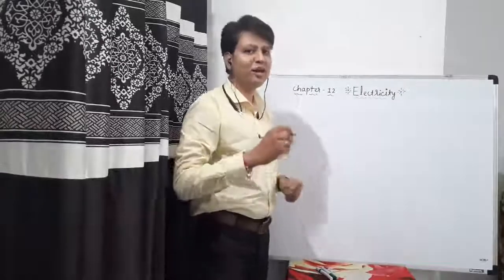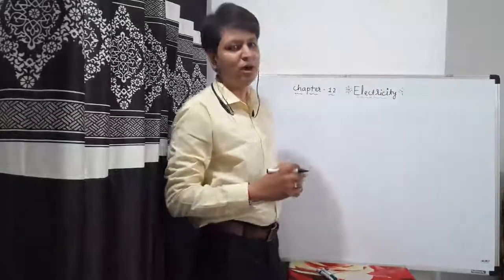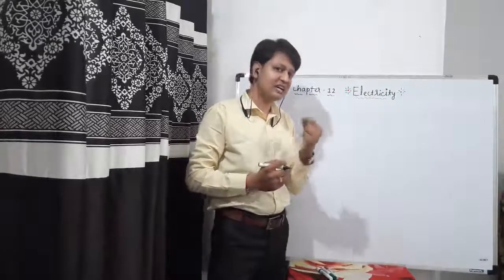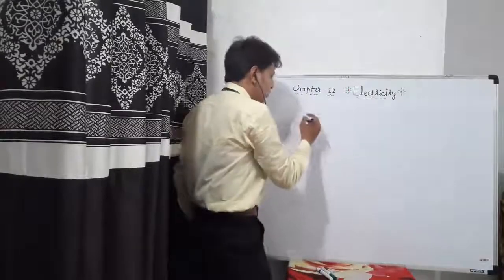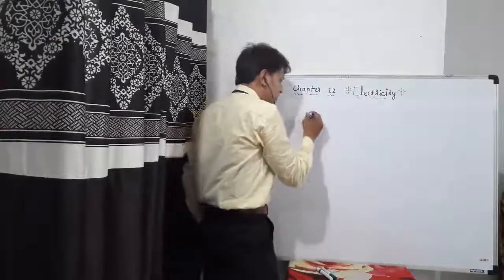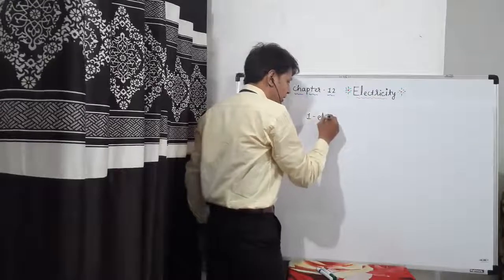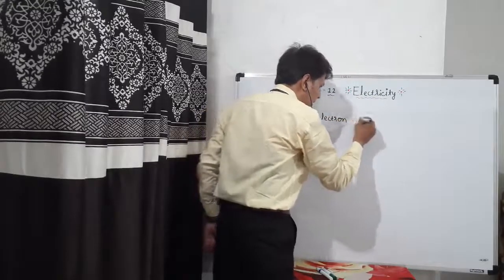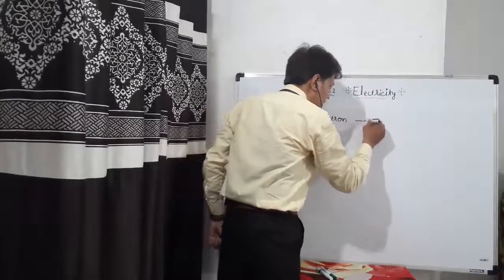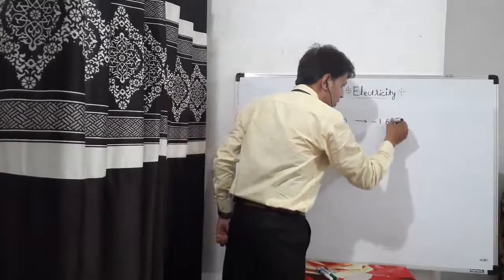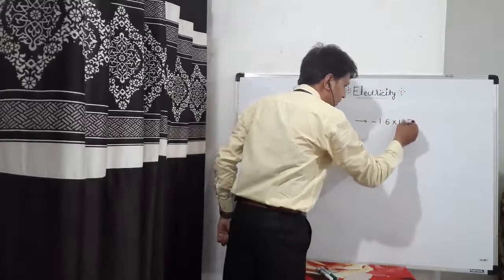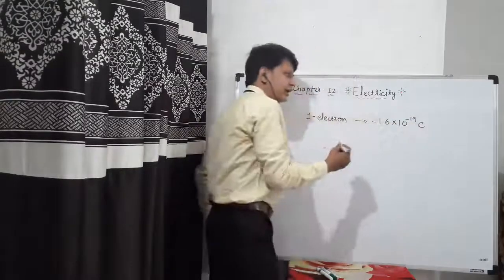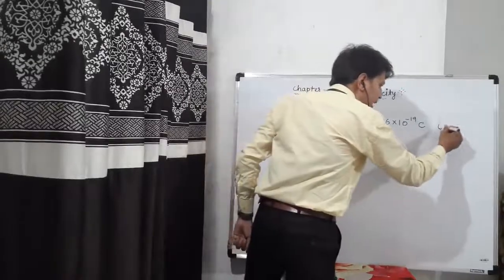Friends, today we are going to learn about one equation for charges. The charge of one electron is minus 1.6 into 10 to the power minus 19 coulomb, and that is a fundamental charge.